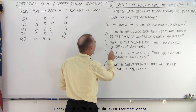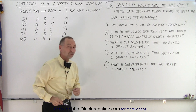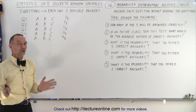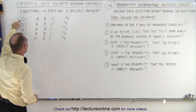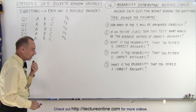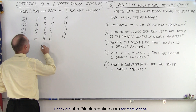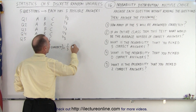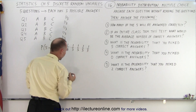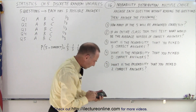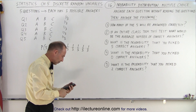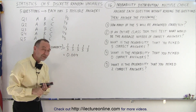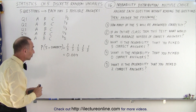What is the probability that you picked five correct answers? This you can fairly easily calculate, because these are independent events. Whatever happens in question one is completely independent of question two. You have a one in three chance to get each question right, which means the probability that all five are correct is simply one-third times one-third times one-third times one-third times one-third — that's one divided by three raised to the fifth power — which equals approximately 0.004, or 0.4%.